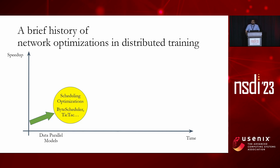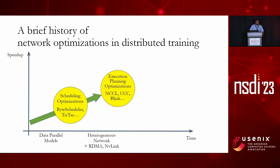This did lead to speedup. Over time, GPU training clusters evolved to add more heterogeneous interconnects and also protocols to use those interconnects, such as RDMA and NVLink. The next wave of research looked at how to better optimize each of these network operations — broadly called execution planning optimizations — and how to better leverage the heterogeneity in the network.